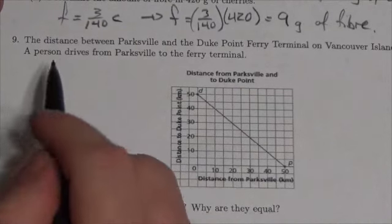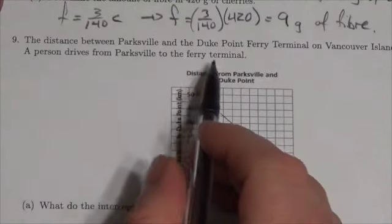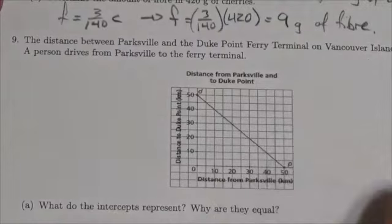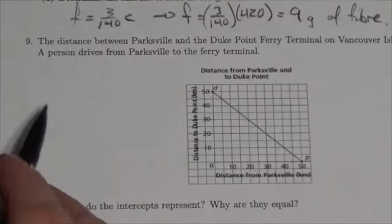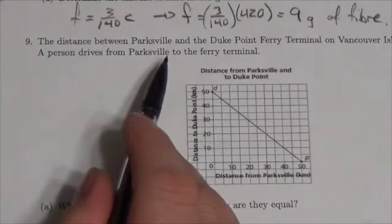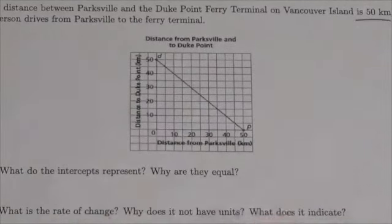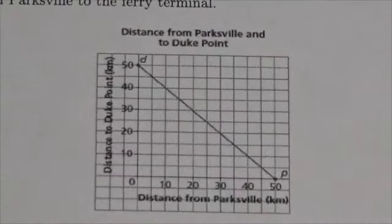Hi everyone. This question says the distance between Parksville and the Duke Point Ferry Terminal on Vancouver Island is 50 kilometers. That's an important number. A person drives from Parksville to the ferry terminal. Let's zoom in a little bit on this graph.